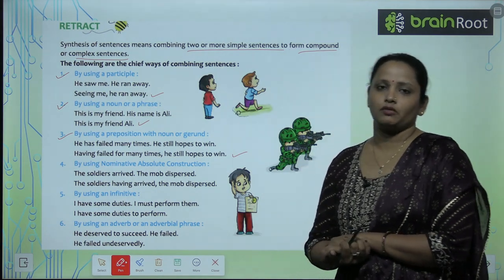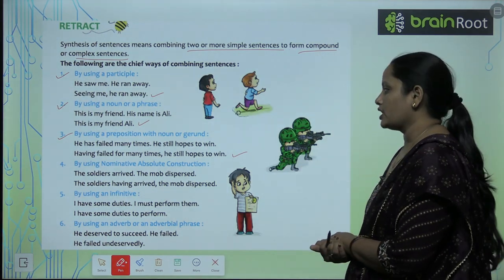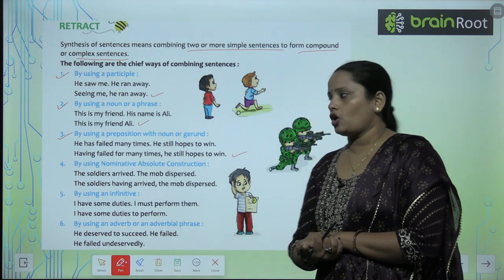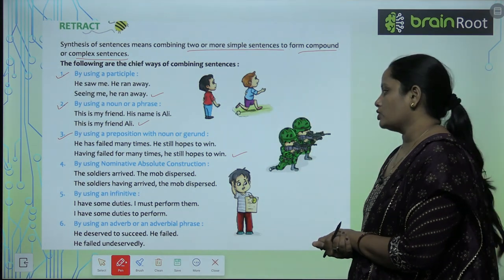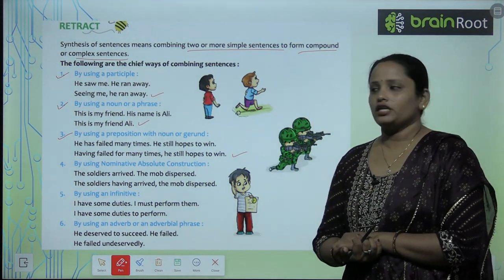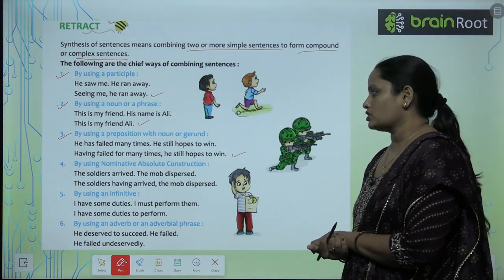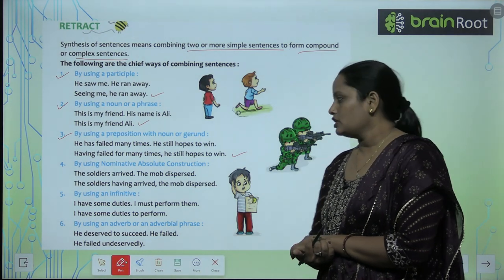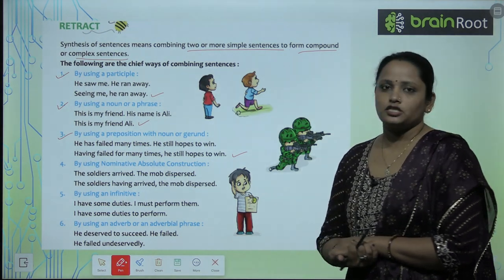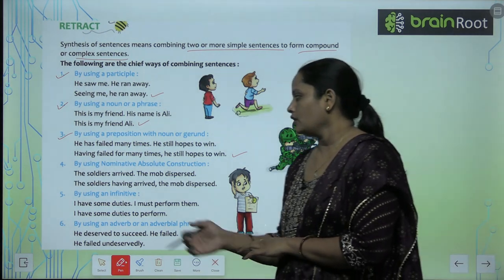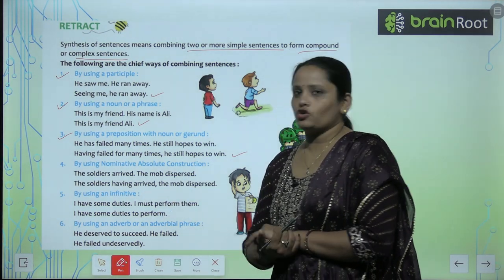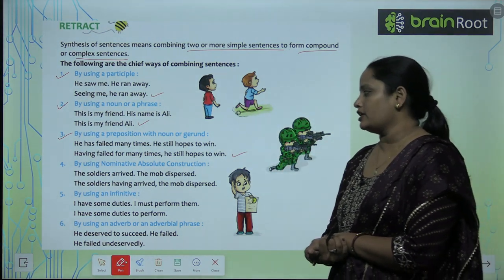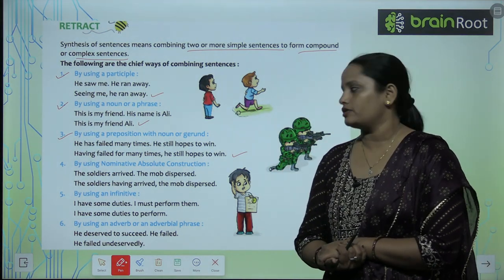The fourth way is by using nominative absolute constructions. For example: 'The soldiers arrived. The mob dispersed.' becomes 'The soldiers having arrived, the mob dispersed.'